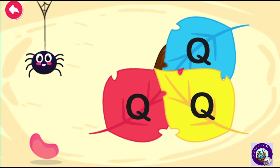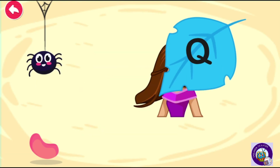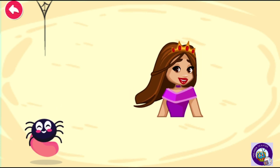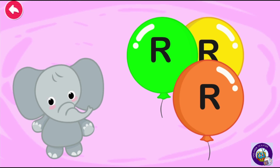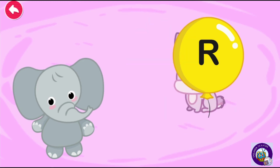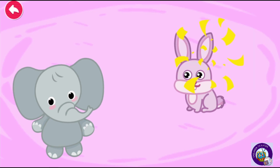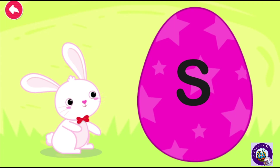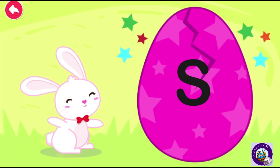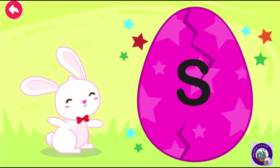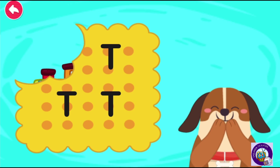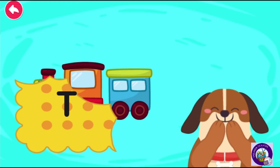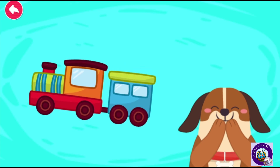Q for queen. R for rabbit. S for sun. T for train.